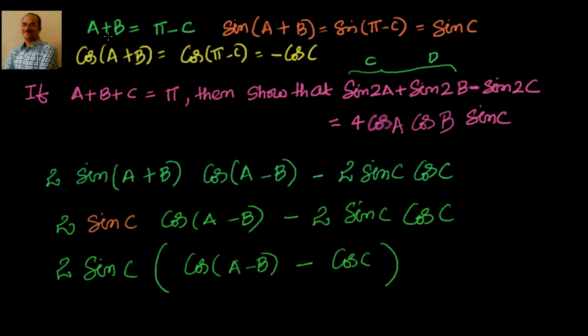What we have done, we know that a plus b plus c equal to π, that means a plus b is π minus c. Sine of a plus b is sin c because sin is positive in second quadrant whereas cos is negative. So cos of a plus b equal to minus cos c.